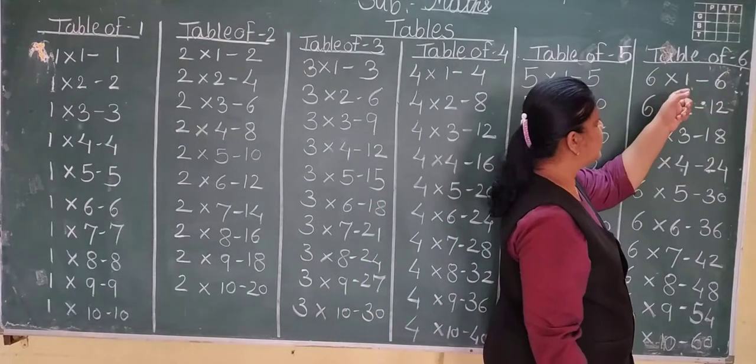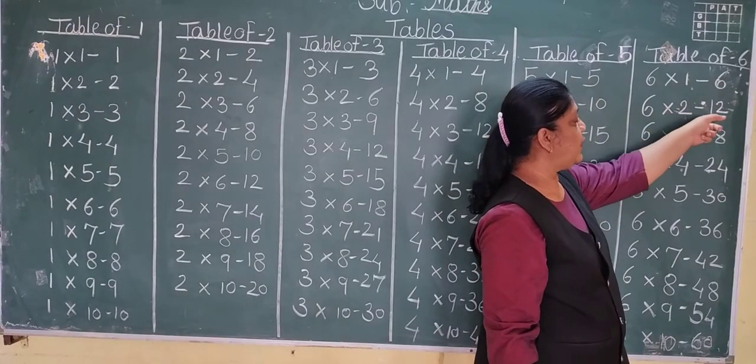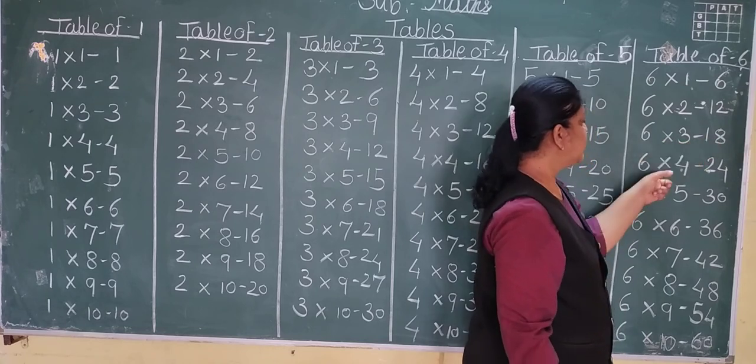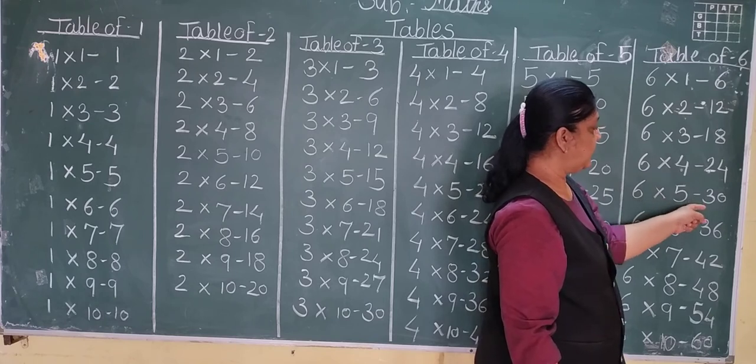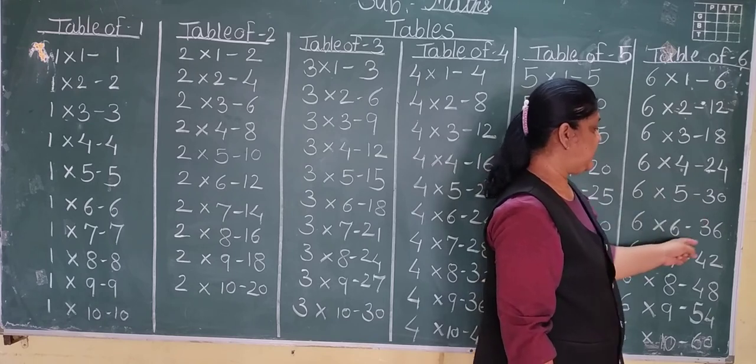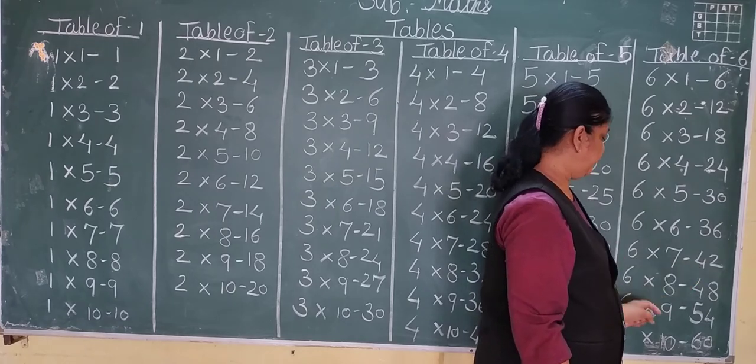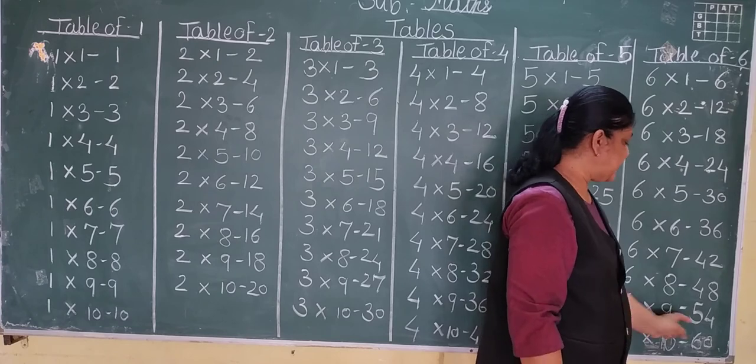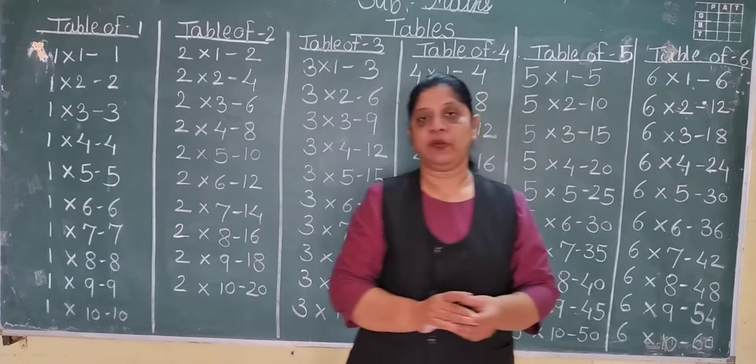Table of 6: 6 ones are 6, 6 twos are 5, 6 threes are 18, 6 fours are 34, 6 fives are 30, 6 sixes are 36, 6 sevens are 42, 6 eights are 48, 6 nines are 54, and 6 tens are 60.